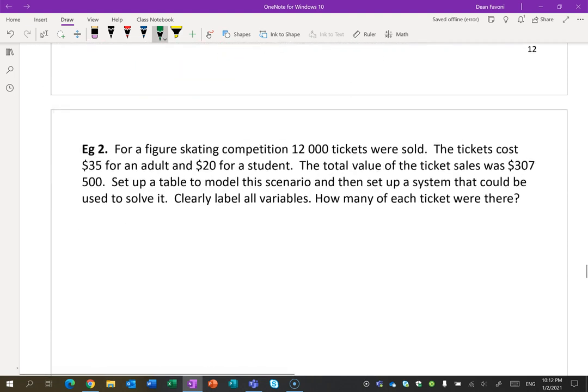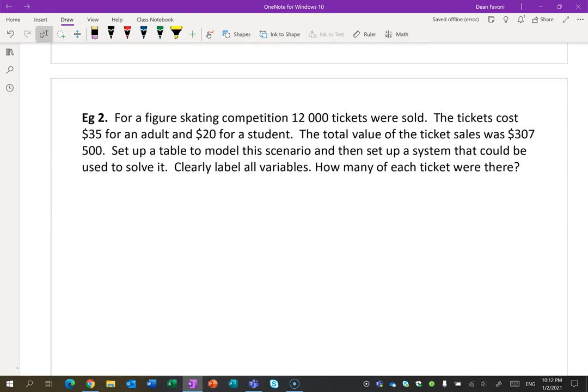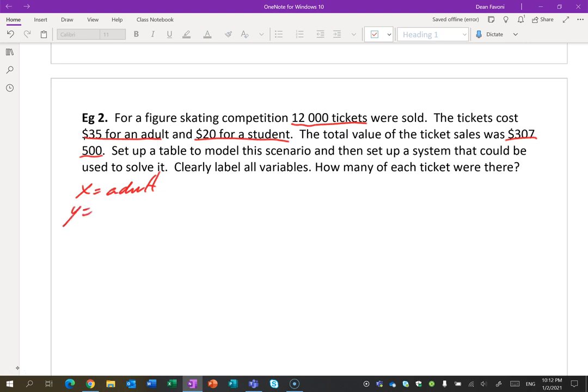Let's try the next one. For a figure skating competition, 12,000 tickets were sold. Tickets cost $35 for an adult. Let's underline this again. 12,000 tickets were sold, $35 for an adult, $20 for a student, and the total value of ticket sales was $307,500. So it says how many of each ticket were sold. So I'll let X equal an adult ticket and Y will equal a student ticket.